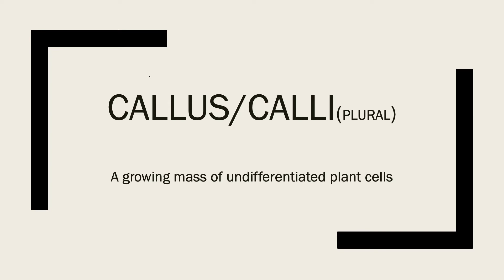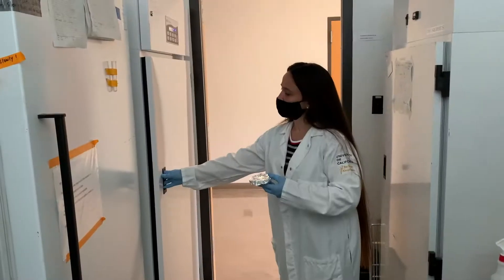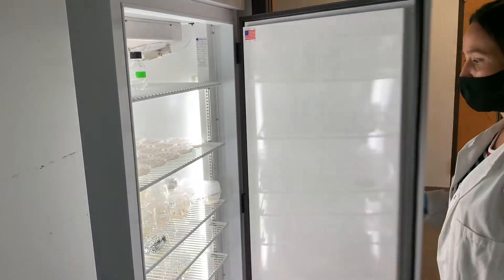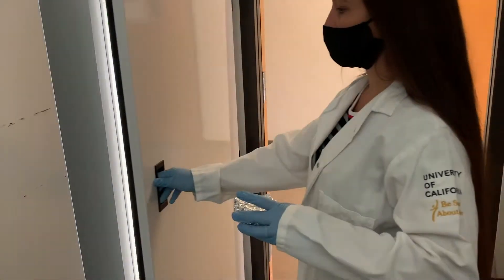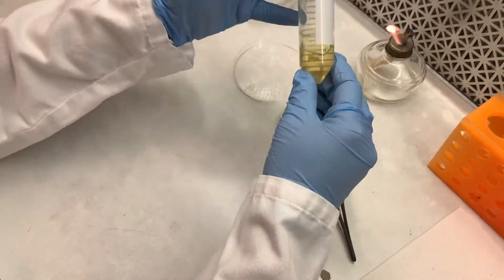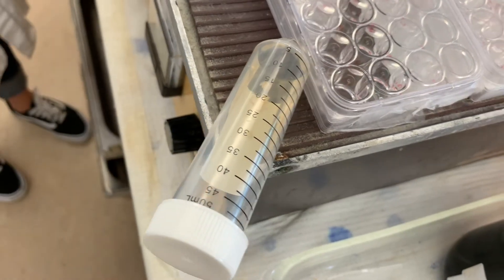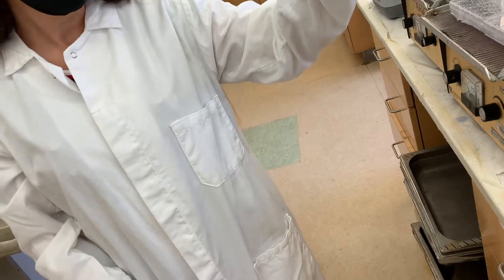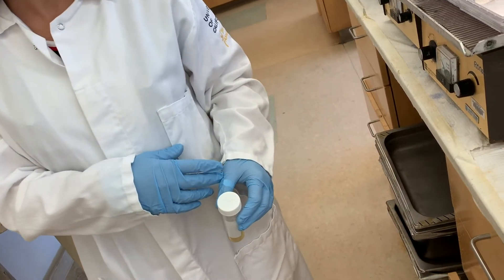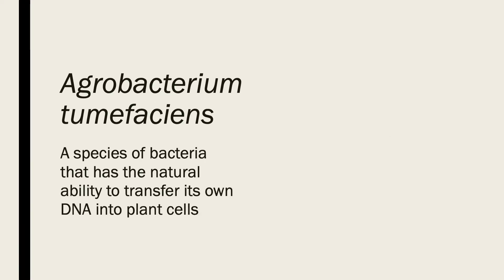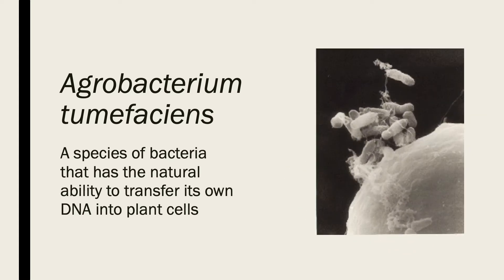We will work with this calli for our transformation. The calli grow in the incubator for nine days. Next, we infect the calli with Agrobacterium and let them shake for half an hour. Then we remove the extra bacteria and dry the calli. We transfer them to a petri dish and let them grow for a few days in darkness at room temperature. This gives the Agrobacterium time to transfer its DNA into the plant.